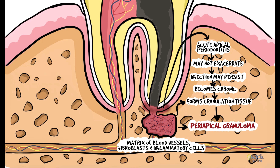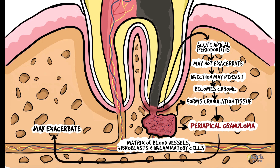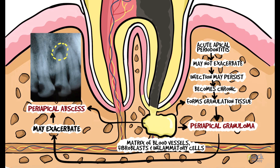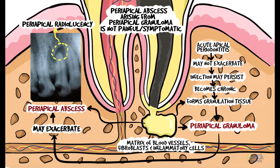However, at times there might be an exacerbation of a periapical granuloma resulting in a periapical abscess. In this case bone resorption may already be caused by the chronic lesion. Hence a periapical abscess arising from these lesions may appear radiolucent in radiographs, and they are usually asymptomatic unlike a periapical abscess arising from an acute apical periodontitis.